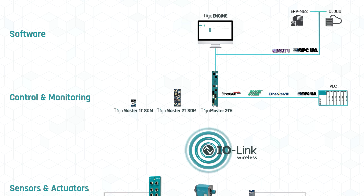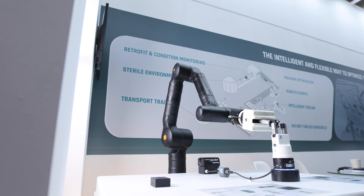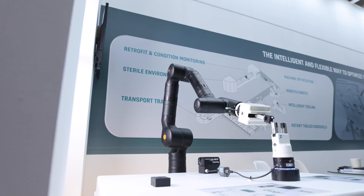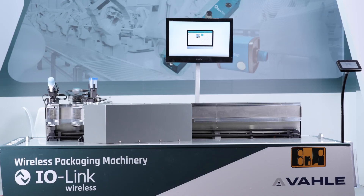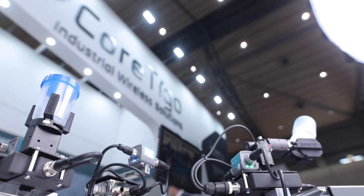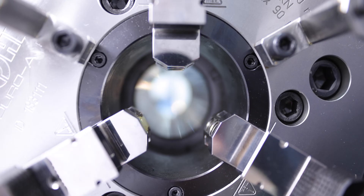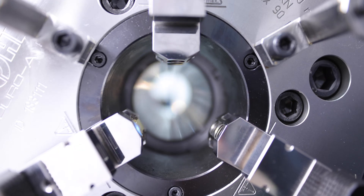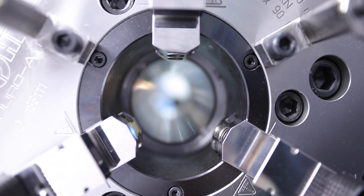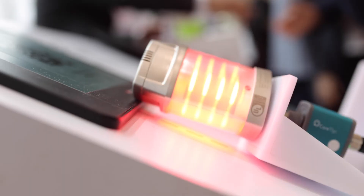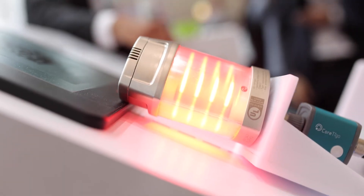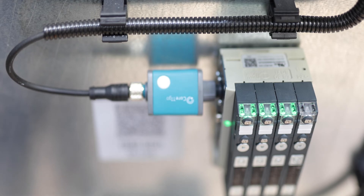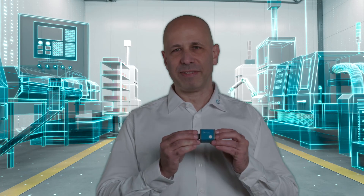At the device level, Cortigo's solution enables devices and endpoints on machines and production lines to become smarter and completely independent. Converting existing IO-Link sensors and actuators to IO-Link wireless is as simple as directly connecting a device to a TIGO Bridge.